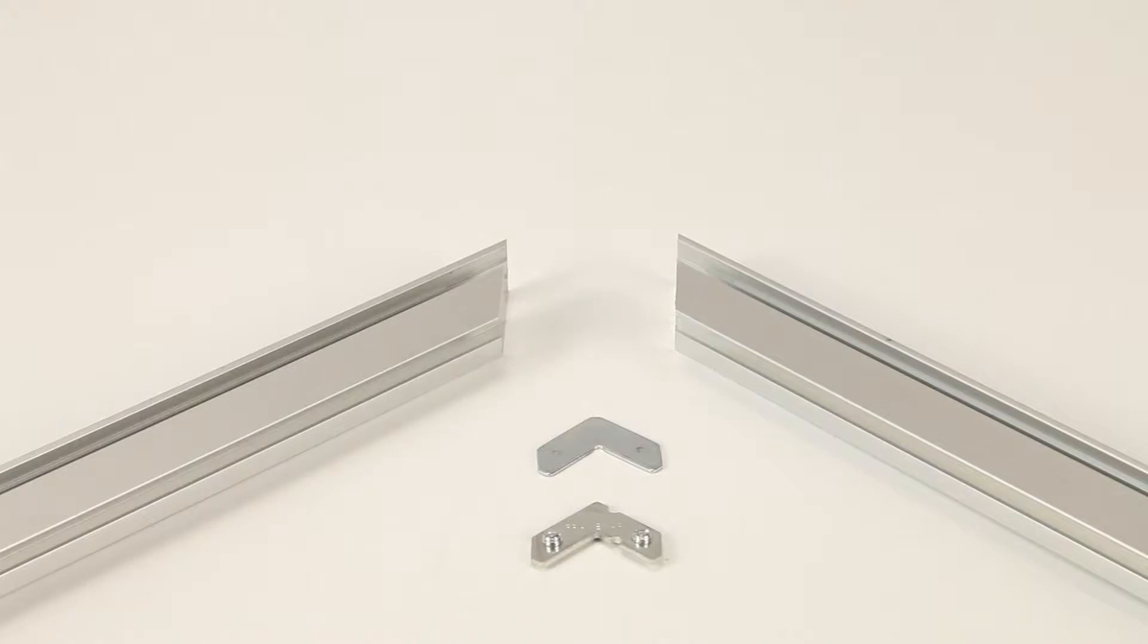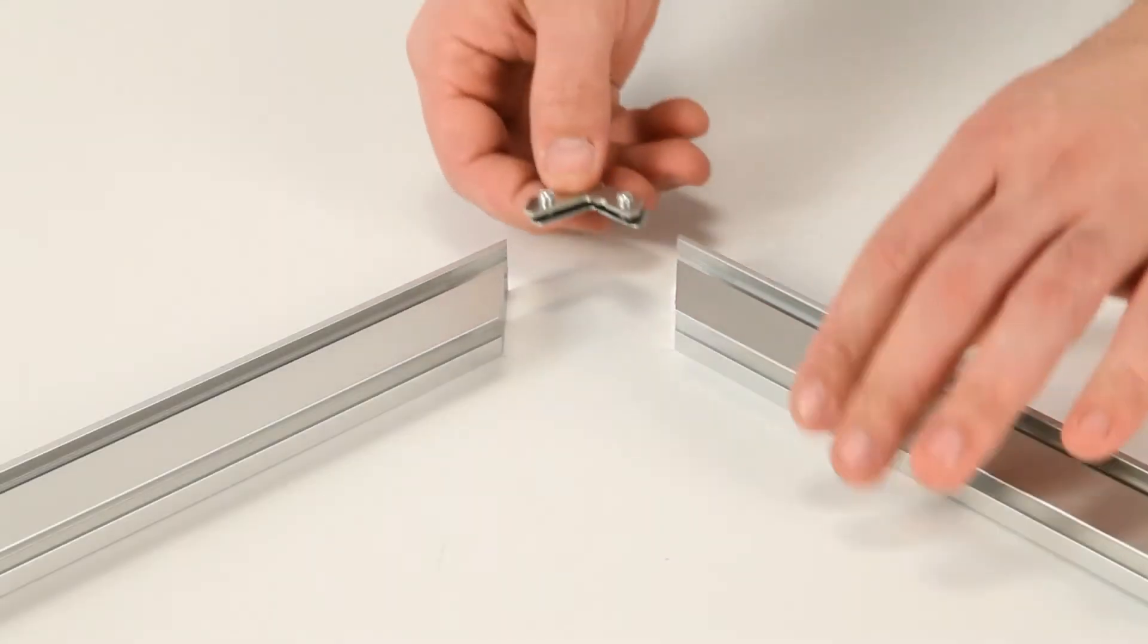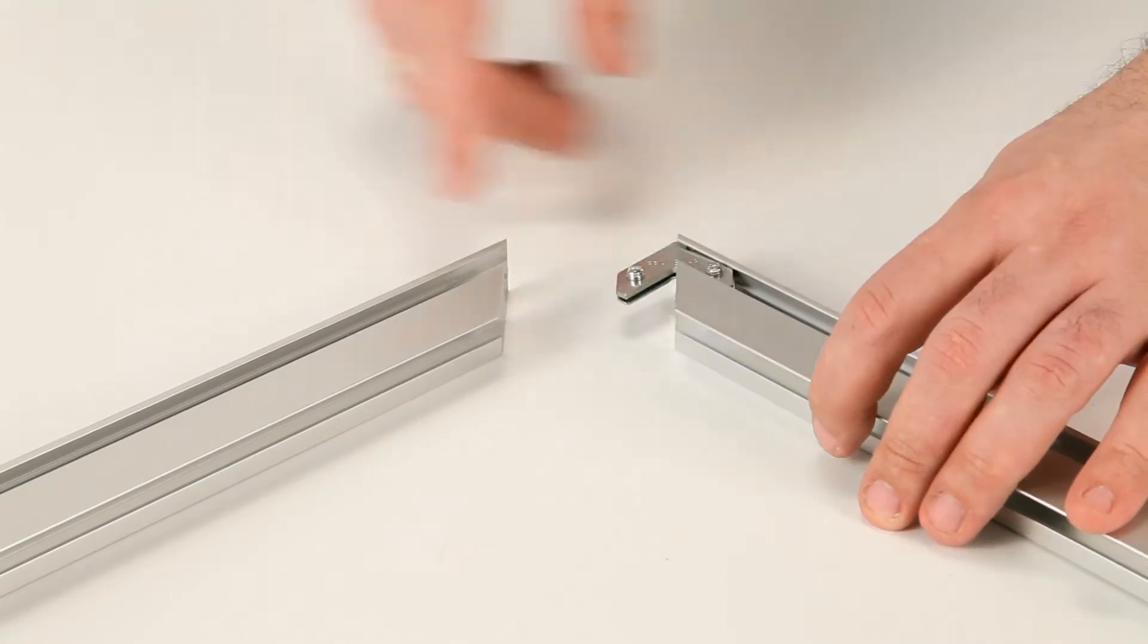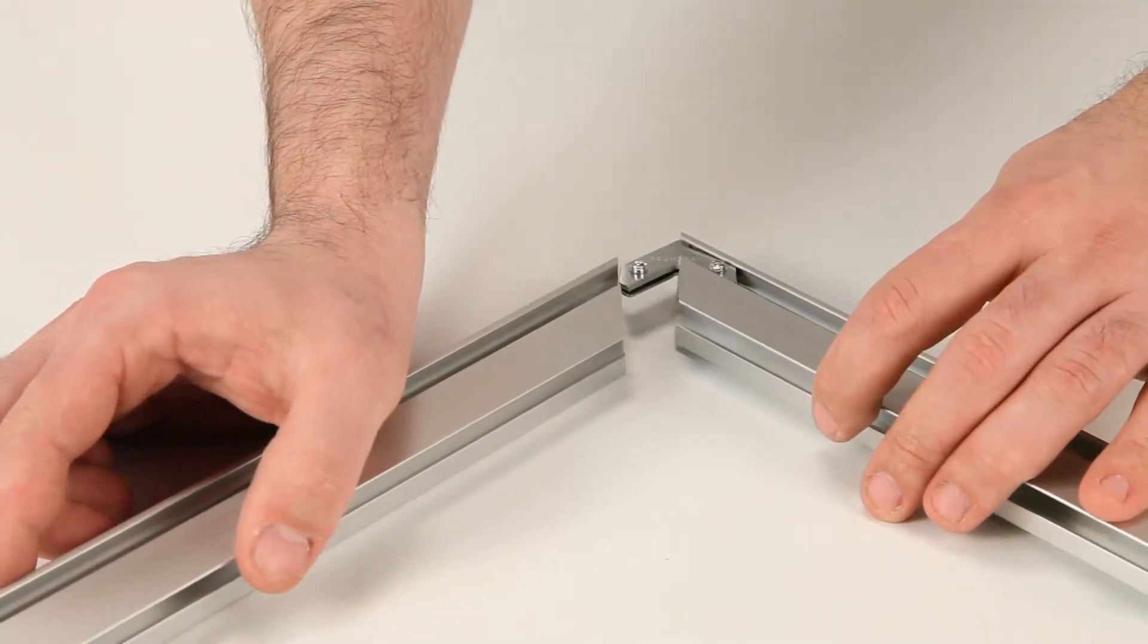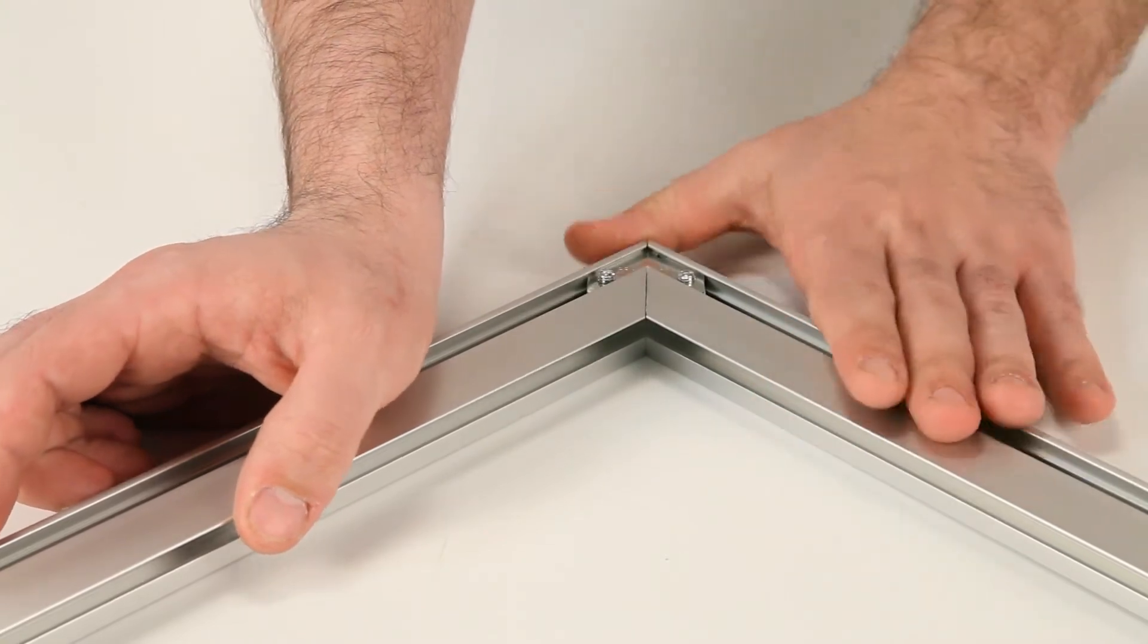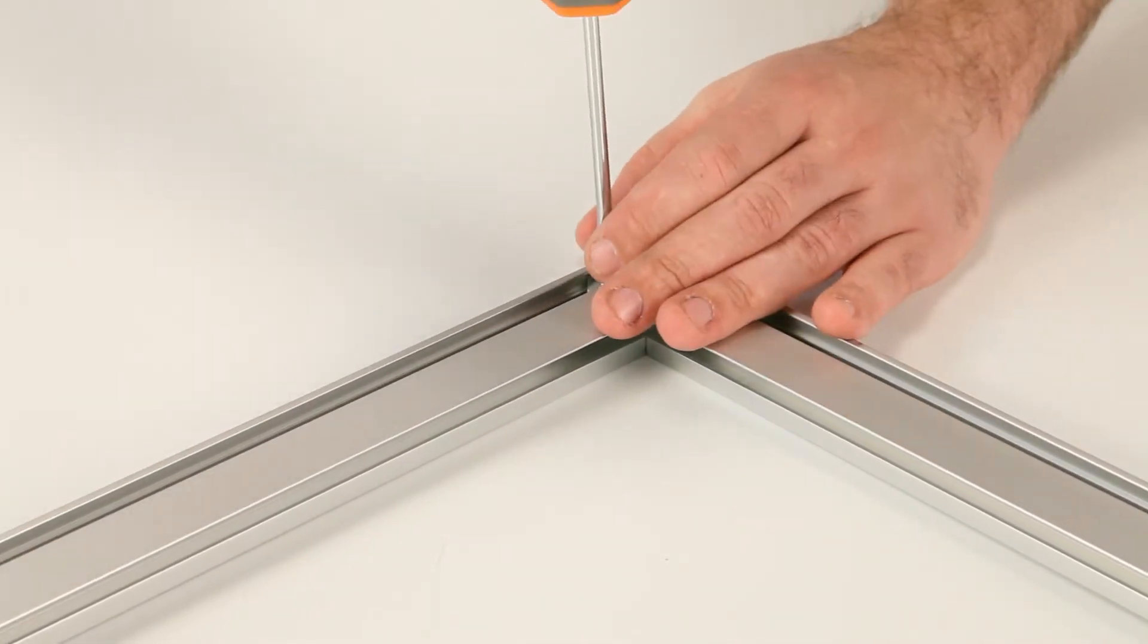Take two of the larger frame rails and place them at a 45 degree angle with the back frame channel visible. Now slide in the two combined angled plates in the frame rail's metal channel. Then connect the other end of the plates to another large frame rail using the same method.